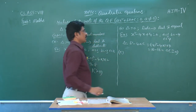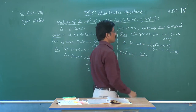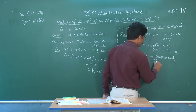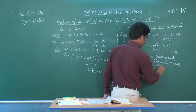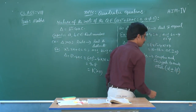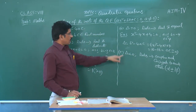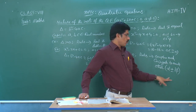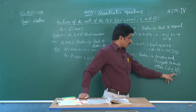Third sub-case, Case 3: if delta is less than 0, the roots are complex and conjugate to each other. That is, one root is alpha plus i·beta and the other root is alpha minus i·beta. If the discriminant is less than 0, the roots are complex and conjugate to each other.